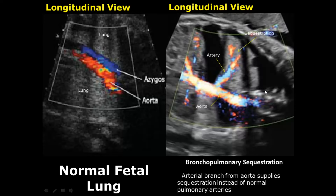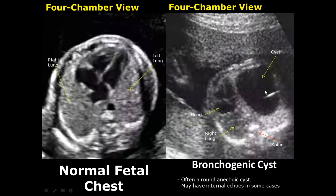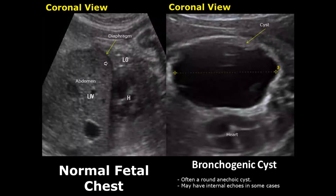A bronchogenic cyst is a lung cyst which appears as an anechoic cyst and may have internal echoes. If it is large enough, it may cause a mediastinal shift. Here is a large bronchogenic cyst in the coronal view causing mediastinal shift.